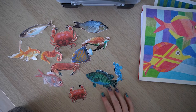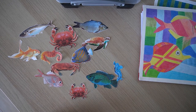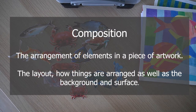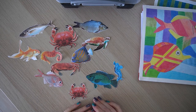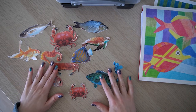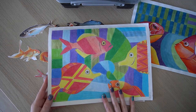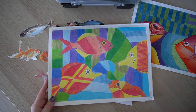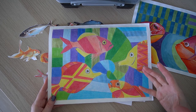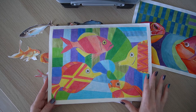Before we can start with this, we need to think about the word composition. Composition means the arrangement of elements within a piece of artwork. So we're not only thinking about where the sea creatures are placed, but also where the pattern is placed, what elements of pattern we have, how large the scale is, and also where everything goes on the page.